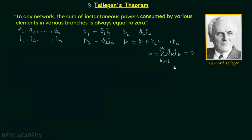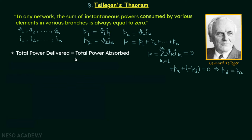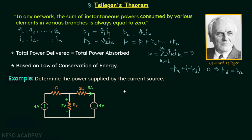When we say the total instantaneous power is equal to zero, this means the total power absorbed plus the total power delivered equals zero. From this, the total power delivered equals the total power absorbed. This is one important point, and it shows that Tellegen's theorem depends on the law of conservation of energy.